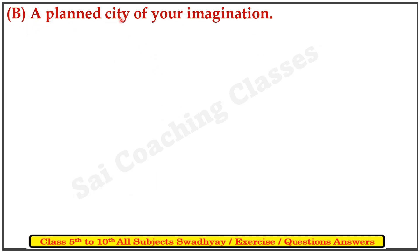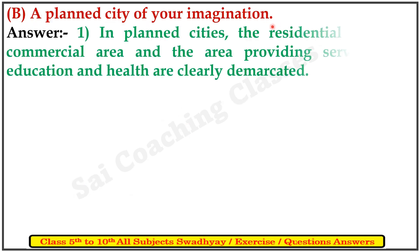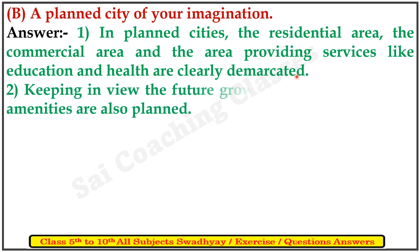B: Describe a planned city of your imagination. First, in a planned city, the residential area, the commercial area and the area providing services like education and health are clearly demarcated. Second, keeping in view the future growth of the city, various civic amenities are also planned.